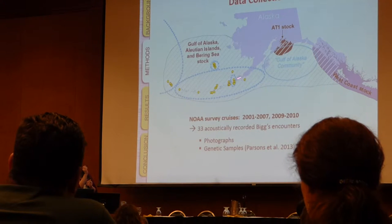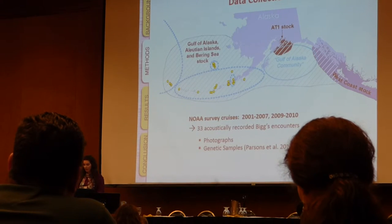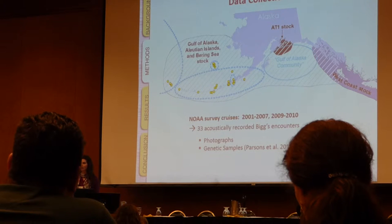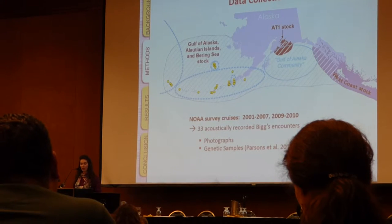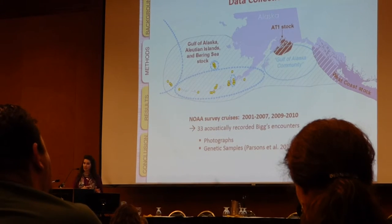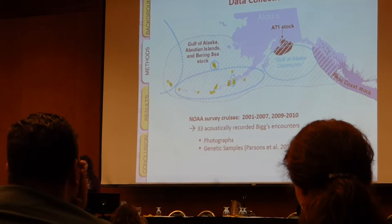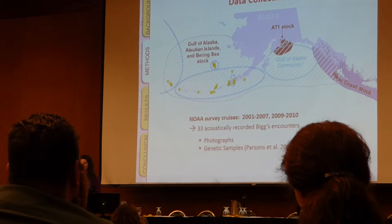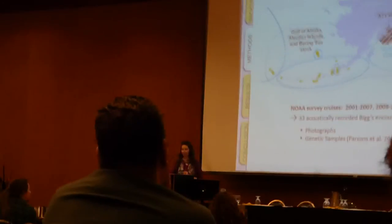These subpopulations are designated by five ellipses on the map. Since killer whale dialects are reflective of genetic lineage, an analysis of the acoustic recordings collected at the same time as these genetic samples would be another way to examine subpopulation structure — which is what I've been working on.